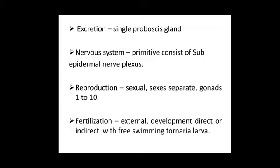For excretion, toxic products are eliminated via a single proboscis gland. The nervous system is primitive and consists of a subdermal nerve plexus — a network of intersecting nerves.